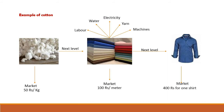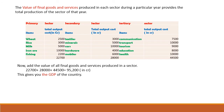Suppose the fabric is used by another company to make ready-made shirts, and the shirt is sold in the market at say 400 rupees for one shirt. This shirt already includes all the intermediate goods required to make it. So the final product is the shirt at 400 rupees. The value of final goods and services produced in each sector during a particular year provides the total production of that sector for that year.